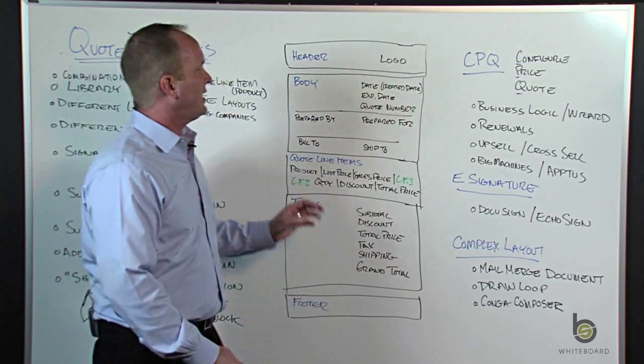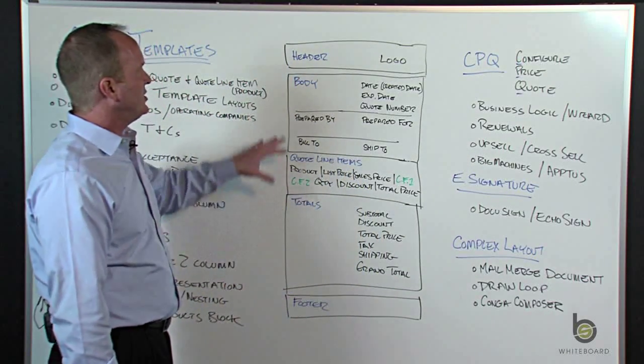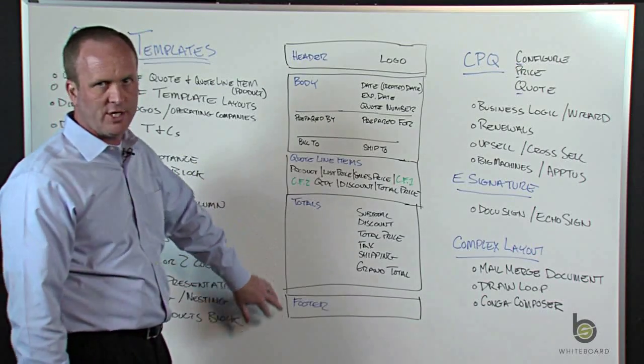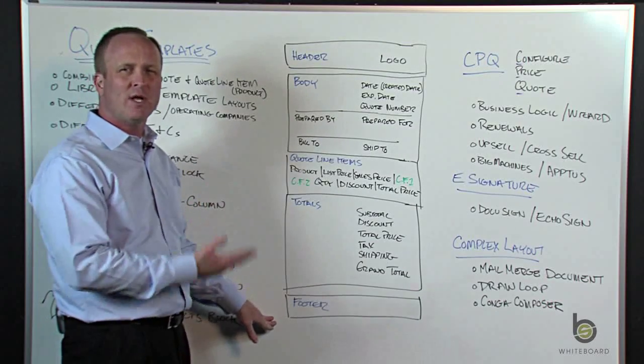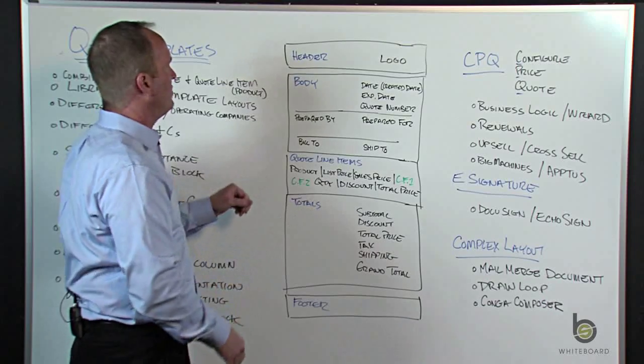Okay, so let's look at the page layout for a quote template. A couple of major sections. You've got a header, the body, quote line items, a total section, and a footer. Again, it's more like a page layout. You can insert more sections if you would like to add more fields.